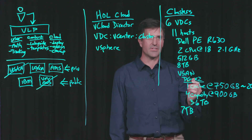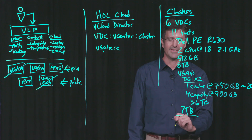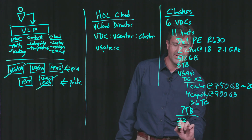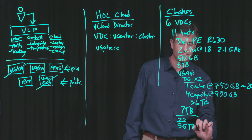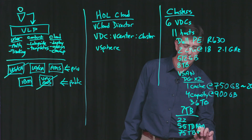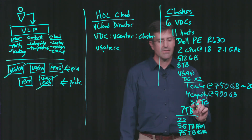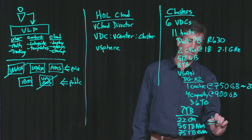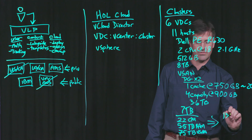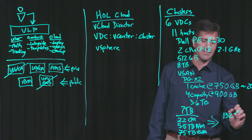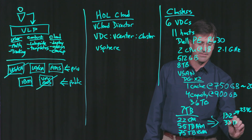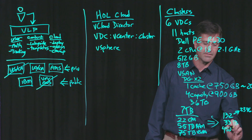Doing the math: with 11 hosts, that gives us 22 CPUs, five and a half terabytes of RAM, and a 75-terabyte vSAN per VDC. Scaling to the full cloud with six VDCs, that gives us 132 CPUs, 2,376 cores, 33 terabytes of RAM, and 450 terabytes of vSAN.